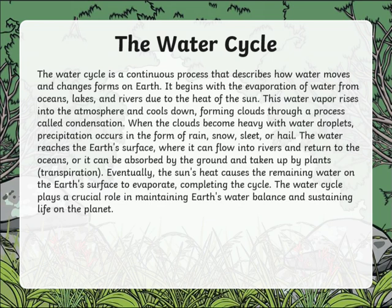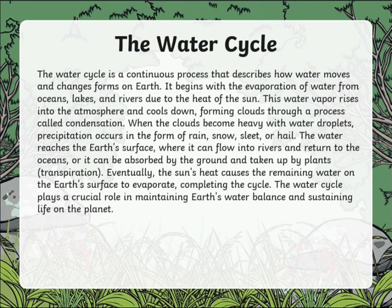The water cycle is a continuous process that describes how water moves and changes on earth. It begins with the evaporation of water from oceans, lakes, and rivers due to the heat of the sun. This water vapor rises into the atmosphere and cools down, forming clouds through condensation. When the clouds become heavy with water droplets, precipitation occurs in the form of rain, snow, sleet, or hail. The water reaches the earth's surface where it can flow into rivers and return to the oceans, or be absorbed by the ground and taken up by plants via transpiration. Eventually, the sun's heat causes the remaining water on the earth's surface to evaporate, completing the cycle, which plays a crucial role in maintaining earth's water balance and sustaining life on the planet.